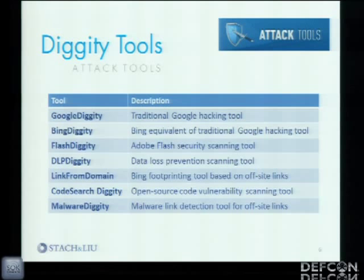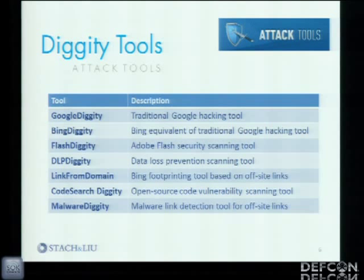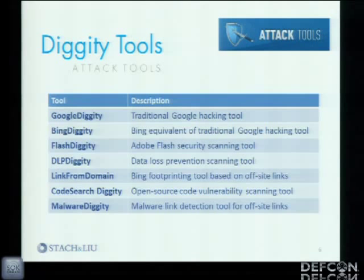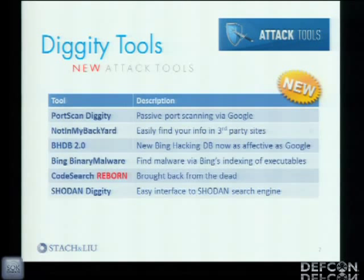Gathering all the information we need as part of the footprinting phase is really step one of any penetration test. Our DLP Diggity tool — which I really encourage people to try — I took every data loss prevention tool I could find, stole all the regex patterns for social security numbers, credit cards, and similar data, and compiled a master list of regular expressions that look through files for interesting data. This allows you to bulk find thousands of documents, download all of them, and look through them for credit cards, passwords, and security numbers.